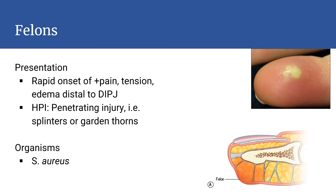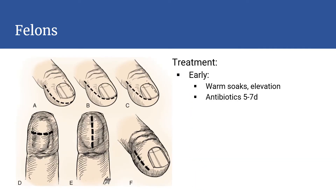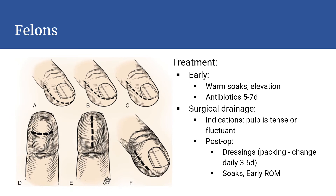A felon is an infection of the volar pulp. They characteristically present with rapid onset swelling and throbbing pain that does not extend proximal to the DIP joint crease. The etiology is usually a penetrating trauma, and Staph aureus is the most common organism associated with felons. Early infection can be managed conservatively with soaks, elevation, and antibiotics. Surgical drainage is indicated if the pulp is tense or fluctuant. The incision is ideally placed paramedian to avoid sensitivity over the pulp, and it is important to spread through the vertical trabeculations that divide the pulp into separate septal compartments to drain the entire infection.